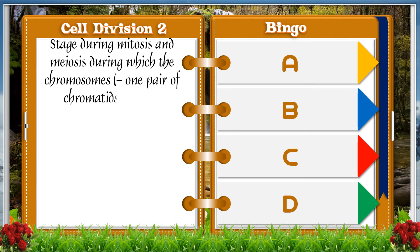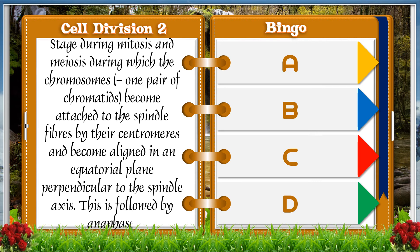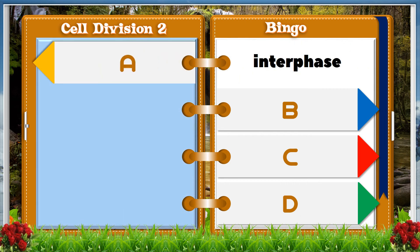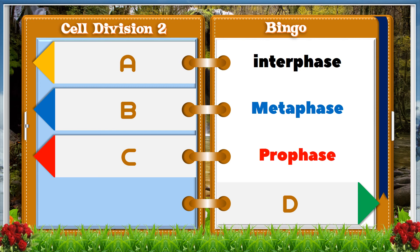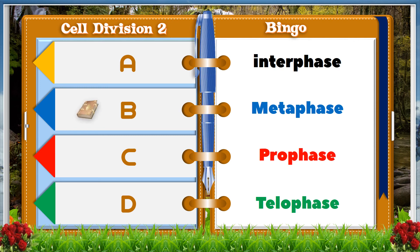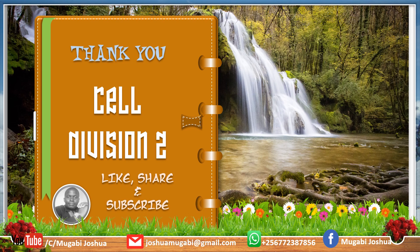Stage during mitosis and meiosis during which the chromosomes become attached to a spindle fiber by their centromere and become aligned in an equatorial plane perpendicular to the spindle axis. This is followed by anaphase. A: interphase, B: metaphase, C: prophase, D: telophase. And the answer is B, metaphase.